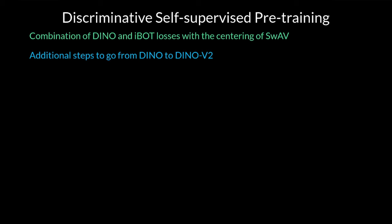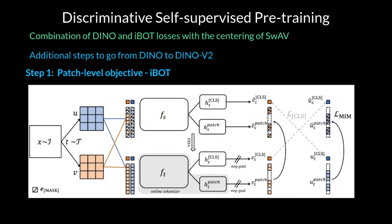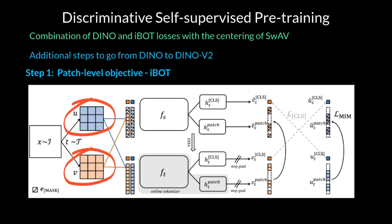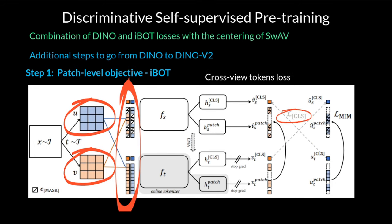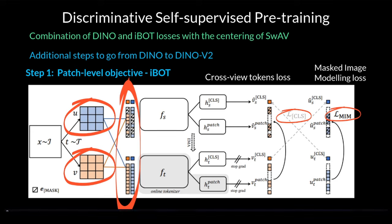The first improvement over DINOv1 is to introduce a patch-level objective from iBot. Given an input image X, we now extract two views U and V, and for each view we extract patches instead of working with the entire image. We introduce two losses: the cross-view token loss, which is the same as cross-entropy in DINOv1, but this time we pass masked patches to the student and unmasked patches to the teacher network — it's like the teacher sees all the information but the student has to guess the missing pieces. The second loss is the masked image modeling loss between the masked and unmasked outputs from the student and teacher respectively.